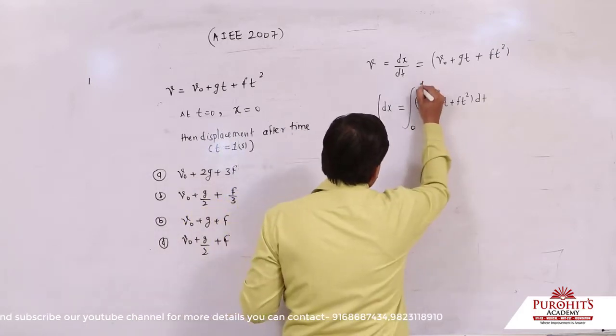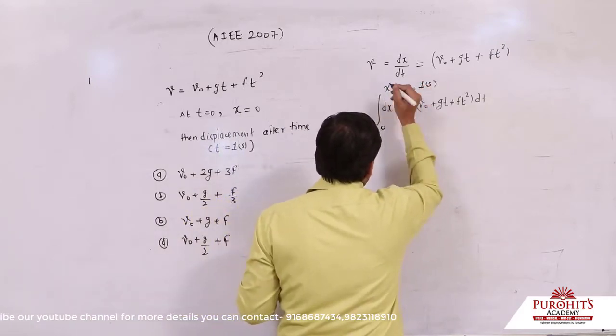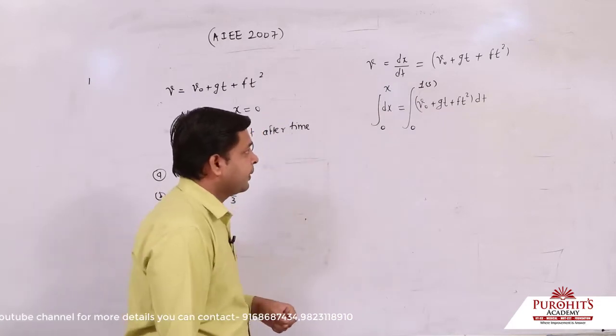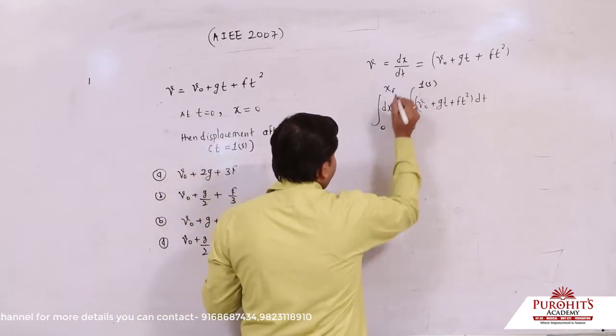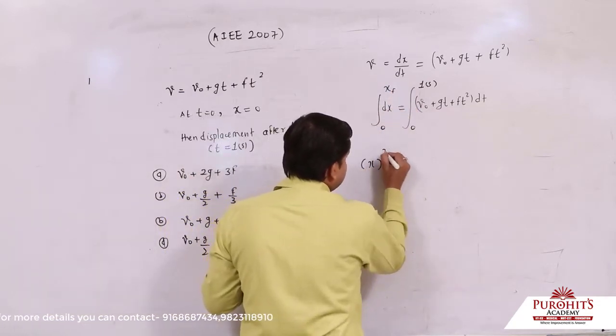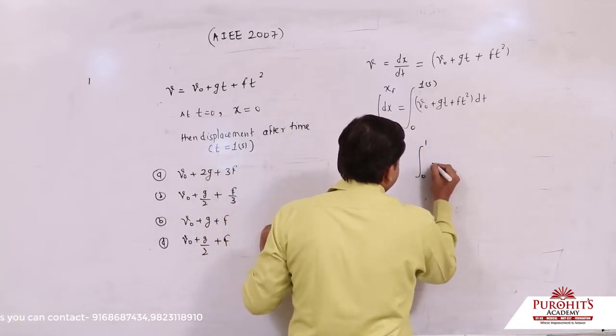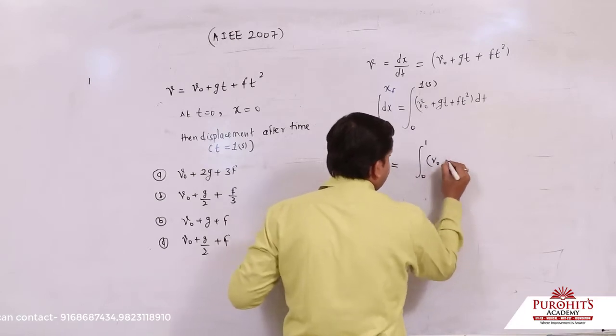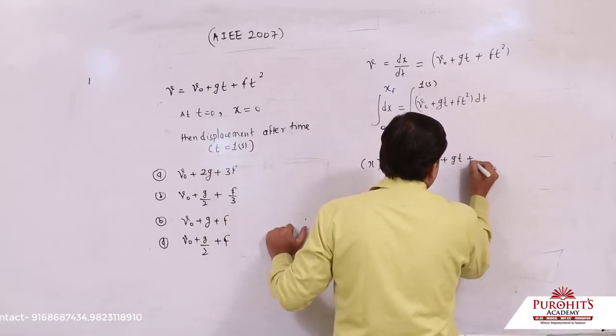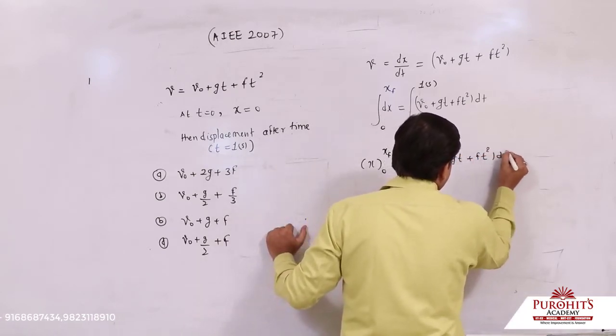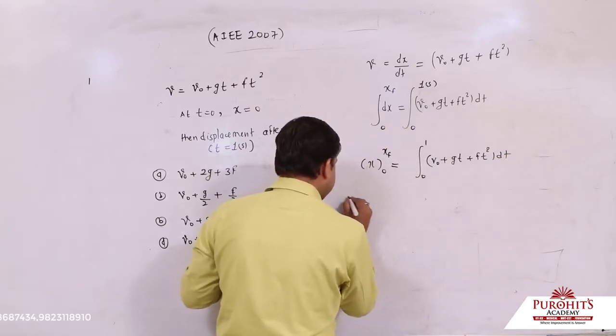And after 1 second, we need to find the particle's position. Finally, the position needs to be found. dx integration x0 to xf, from 0 to 1 second, v0 plus gt plus ft square dt, xf minus 0.